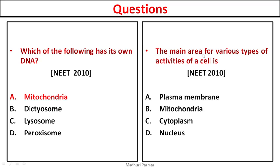The main area for various types of activities of a cell is: plasma membrane, mitochondria, cytoplasm, or nucleus? Not every reaction happens at the plasma membrane. The answer is cytoplasm — cytoplasm is where all cellular activities take place. All the organelles are also present inside the cytoplasm.